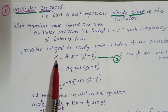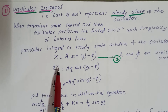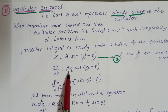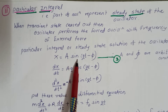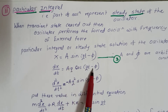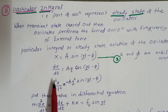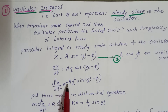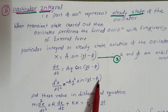Taking the derivative with respect to t, we get dx/dt = A·Q·cos(Qt − φ). Differentiating again with respect to t, we get d²x/dt² = −A·Q²·sin(Qt − φ).